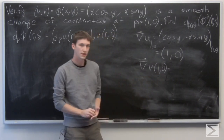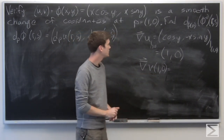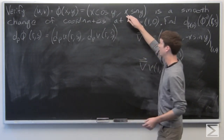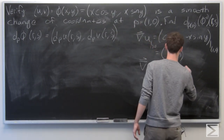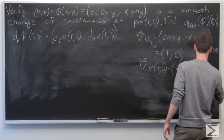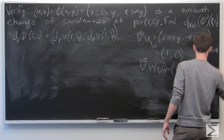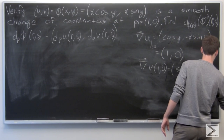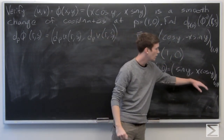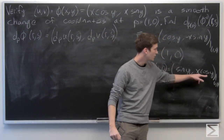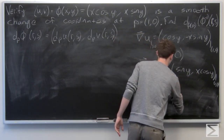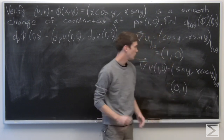Similarly, we take the gradient vector of v at the point (1, 0). That is the partial derivative of v with respect to x and with respect to y, giving (sin y, x cos y). Evaluating at p: sine of 0 is 0, x is 1, cosine of 0 is 1, so the gradient vector of v at p is (0, 1).